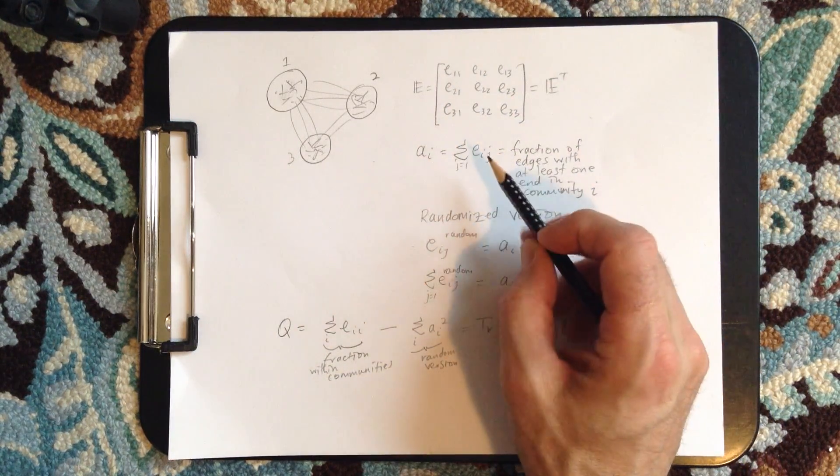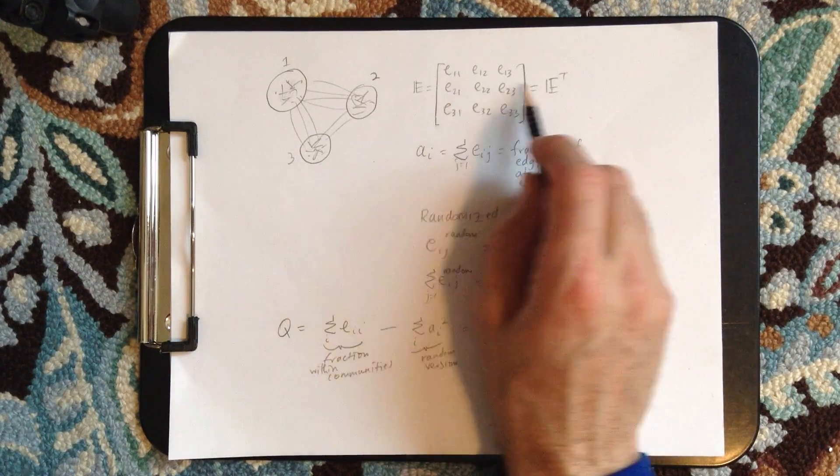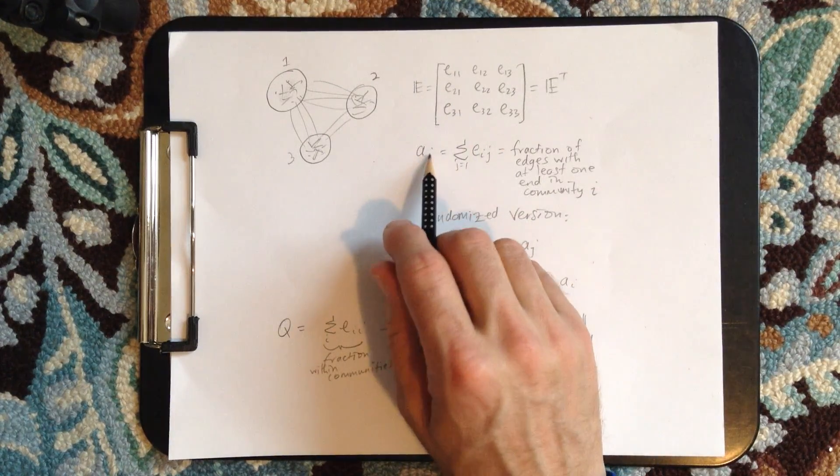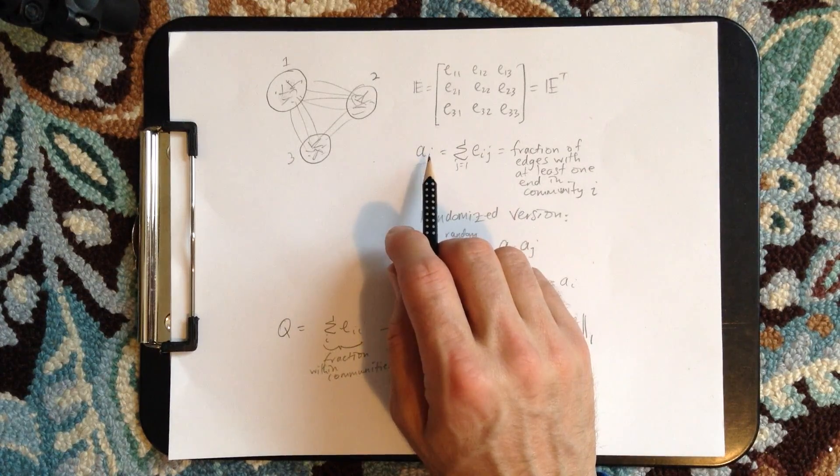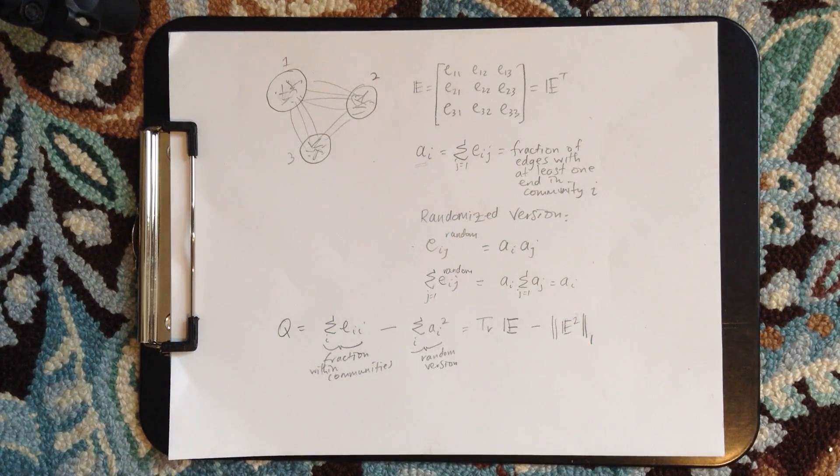so J equals one, so we're summing across here, then we'll call this thing AI. So this is the fraction of edges that have at least one end in community I.